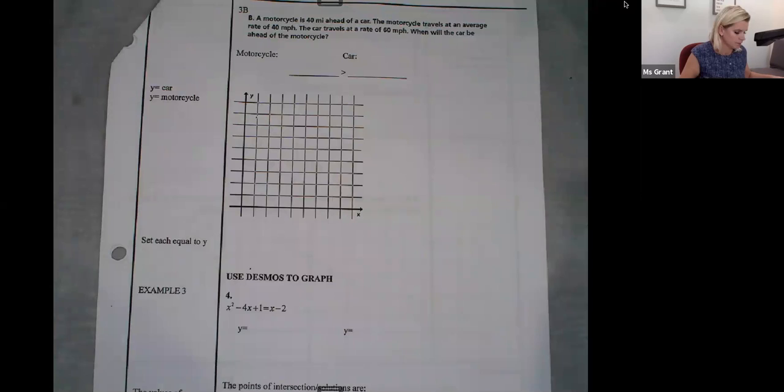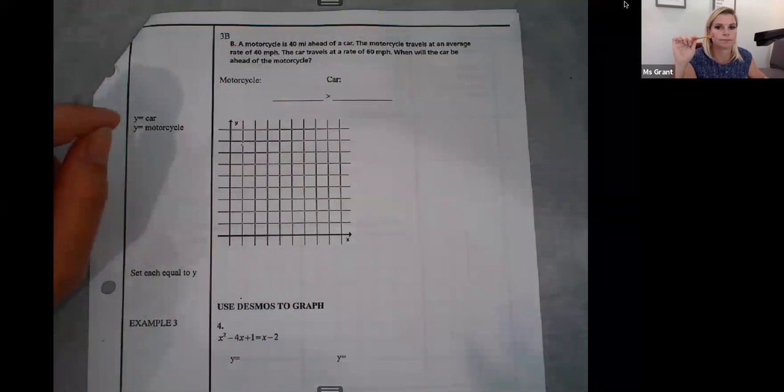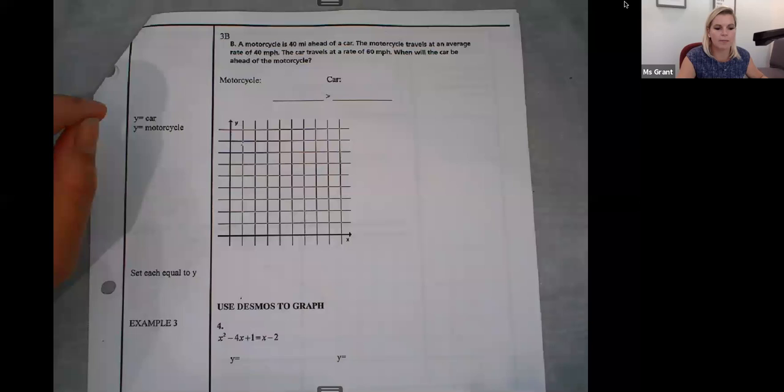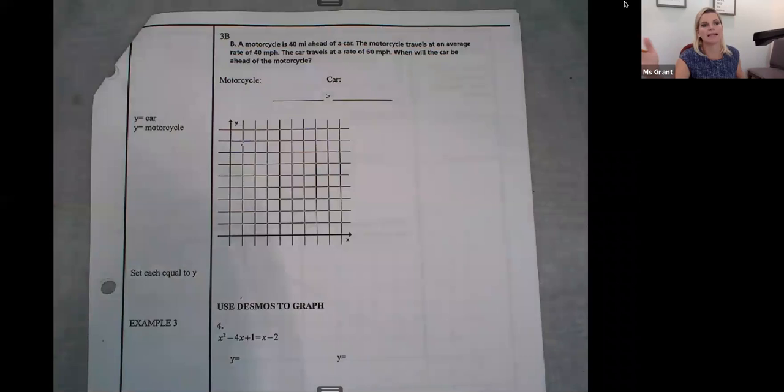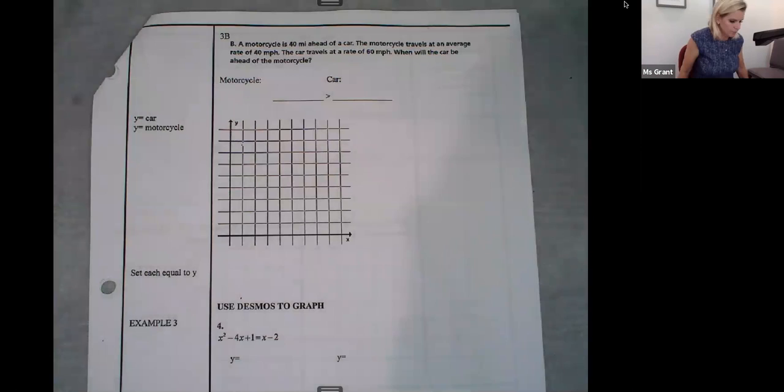All right. I'm going to turn the page. Next, we have a word problem. A motorcycle is 40 miles an hour ahead of a car. So the motorcycle is driving and it hits the 40 mile mark. Then that motorcycle is going 40 miles an hour. So as soon as the motorcycle hits the 40 mile distance, the car starts driving. The car is trying to catch up. The car drives 60 miles an hour. When will the car be ahead? So I want to know when it's going to pass it and then be ahead of the motorcycle.